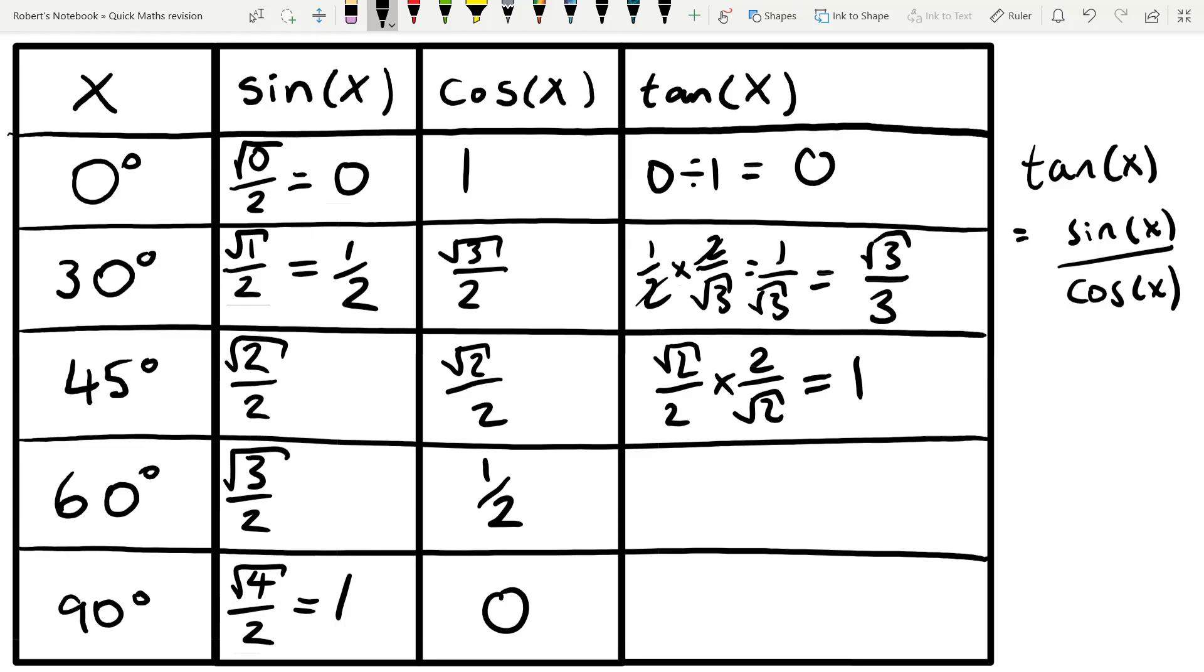And we've only got two more values left, so let's keep going. So we've got root 3 over 2, flip it and times it, so half, flip it and you get 2. And that gives us the answer, square root of 3.